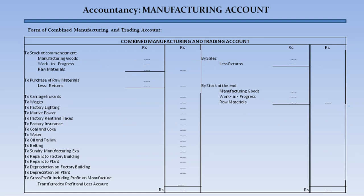The form of combined manufacturing and trading account will have on the debit side: stock at commencement of manufacturing goods, work in progress, and raw material. Also purchases of raw materials less returns, and manufacturing and trading expenses such as carriage inwards, wages, factory lighting, motive power, factory rent and taxes, factory insurance, coal, coke, water, oil, tallow, belting, sundry manufacturing expenses, repairs to factory building, repairs to plant, depreciation on plant and machinery, and depreciation on factory building.